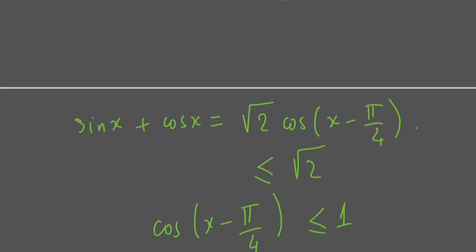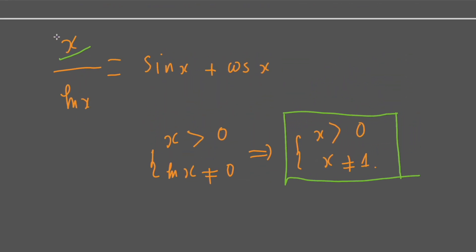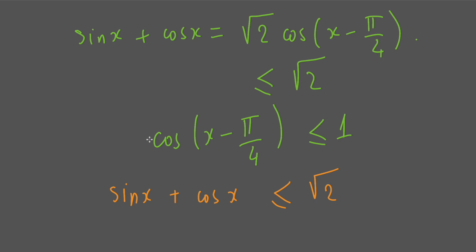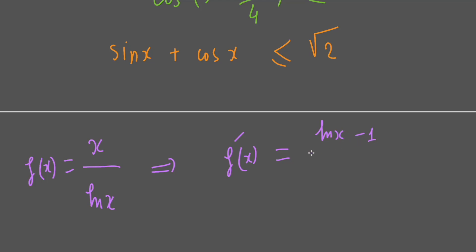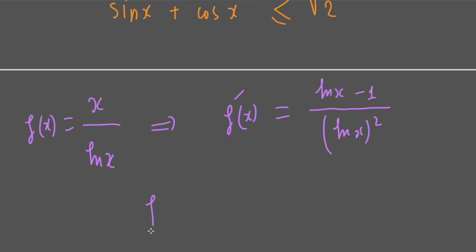Now we will prove that the left-hand side is greater than square root of 2. To prove this, we let f(x) equal x over ln(x) and find its minimum value. The derivative of f(x) is (ln(x) minus 1) over (ln(x)) squared. Setting the derivative equal to 0 gives x equals e.